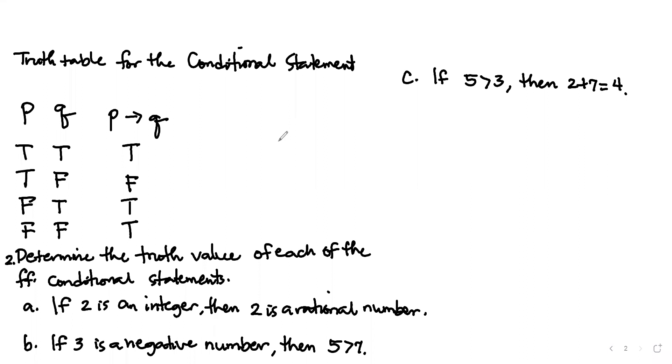How to determine the truth value of the given conditional statements. Let's determine the truth value of each of the following conditions. When we say the truth value of the given statement, the answer is true or false. Letter A: if two is an integer, then two is a rational number. So let's determine first.